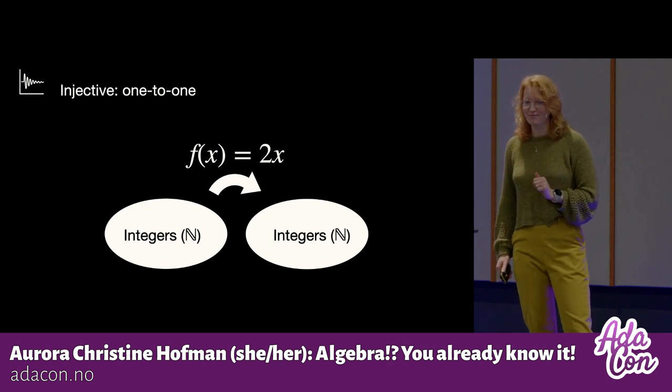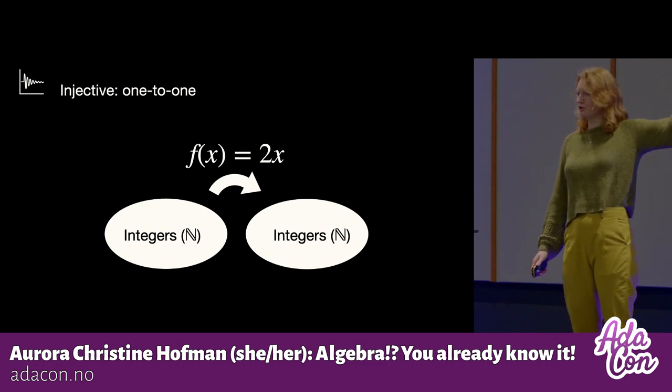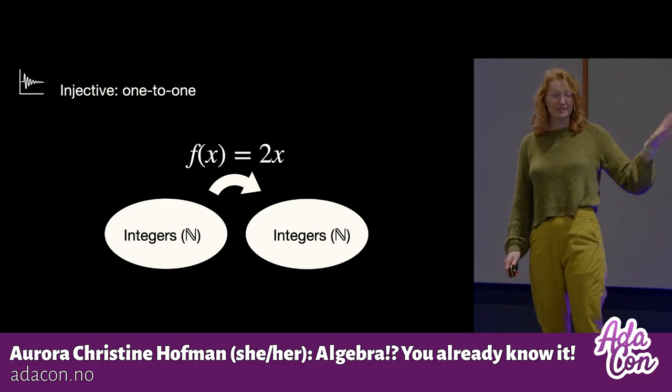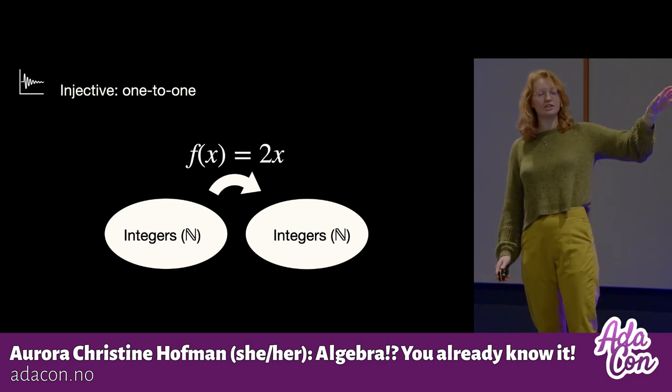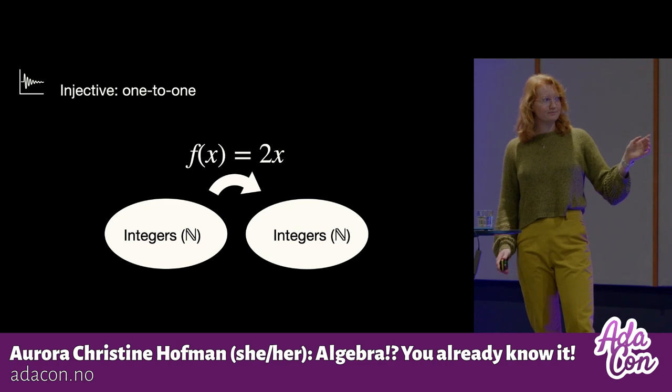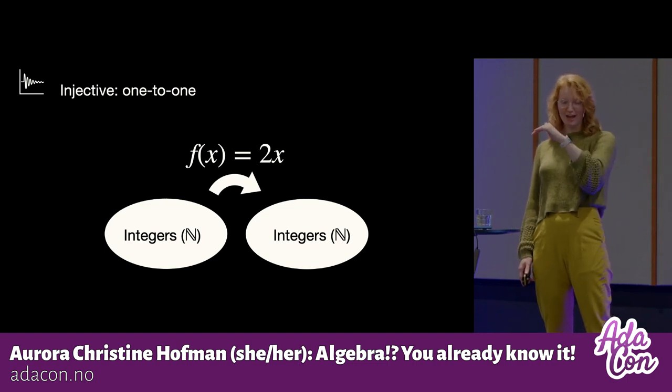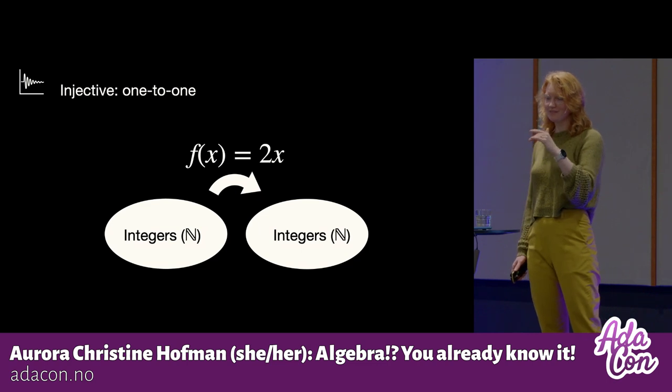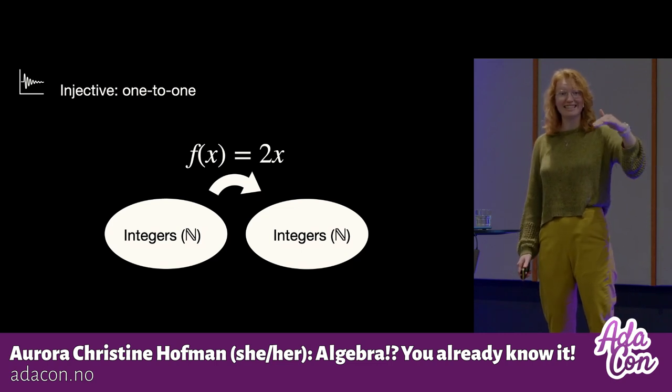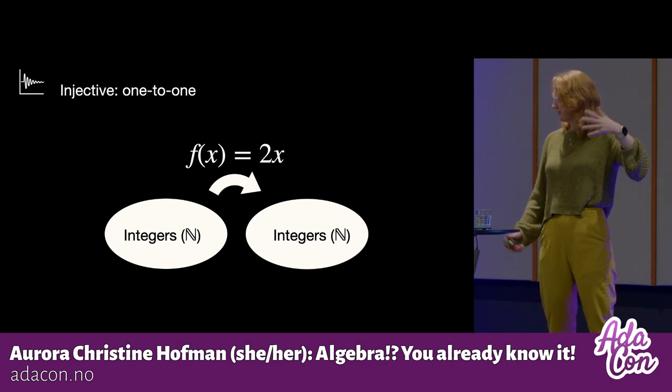Let's start with injective, or one-to-one. Now, we remember that we have our input space, our domain, and we go to our output space, the codomain. And in this example, both of these spaces is the set of integers, or natural numbers, and my function is two times x. Okay. So my function is injective, or one-to-one, if there is only one value in my domain that maps to the same value in my codomain. So in this case, that means that only three, for example, in my domain will map to six in my codomain.